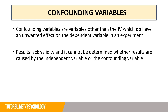A confounding variable is a variable other than the IV which does have an unwanted effect on the dependent variable in an experiment. Results become biased as it cannot be determined whether the results are caused by the IV or by the confounding variable.